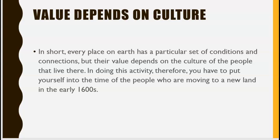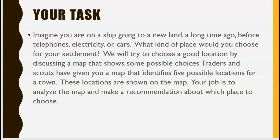In doing this activity, you have to put yourself into the time of the people who are moving into the new land in the early 1600s. Imagine you're on a ship going to a new land — before telephones, electricity, or cars. What kind of place would you choose for your settlement? Traders and scouts have given you a map that identifies five possible locations for a town. Your job is to analyze the map and make a recommendation about which place to choose.